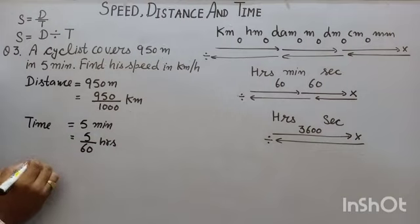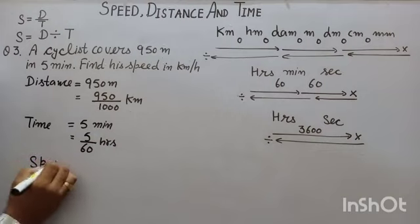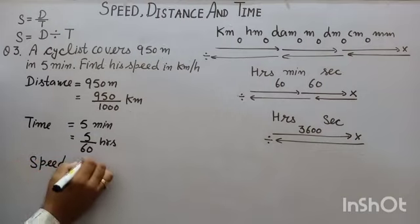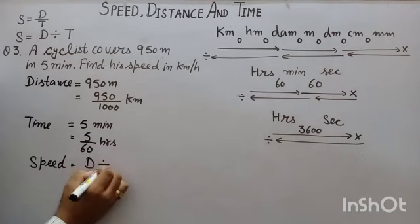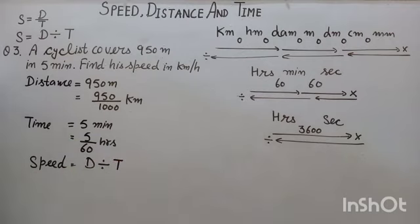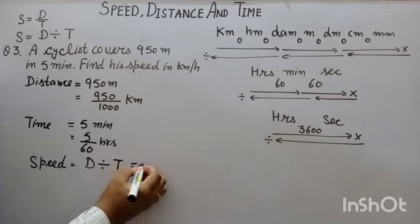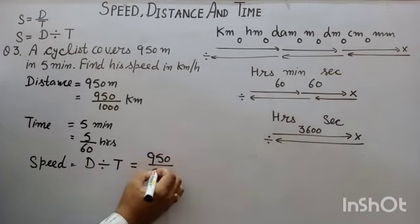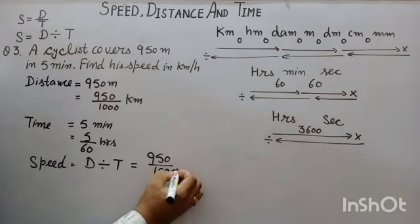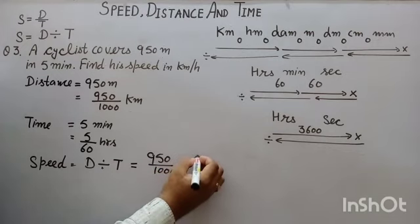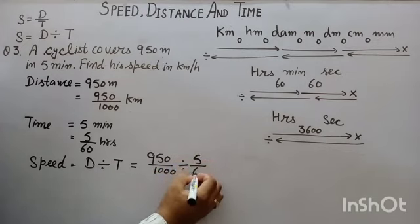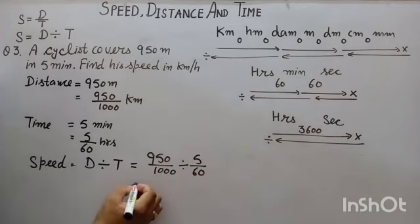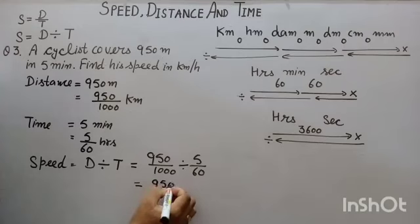So, speed is equal to distance divided by time equals 950 upon 1000 divided by 5 by 60. Division in fraction: 950 upon 1000.